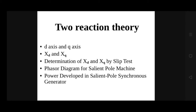Good morning students. Today we are going to discuss the two reaction theory for salient pole machines. In this topic we will be dealing with d-axis and q-axis, the two types of axis in salient pole machines and their corresponding reactances Xd and Xq. Then how to determine the values of Xd and Xq by using the slip test, how to draw the phasor diagram, and the power developed in salient pole synchronous generators.